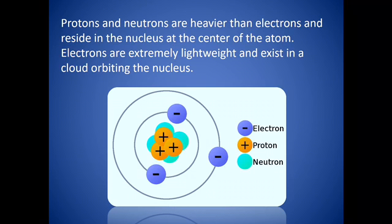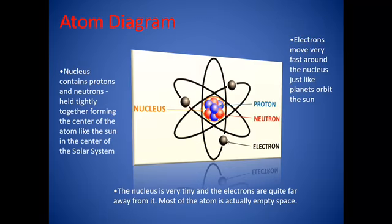And this is an atom diagram. You'll notice that the nucleus contains protons and neutrons and they're held tightly together, forming the center of the atom like the sun in the center of the solar system.